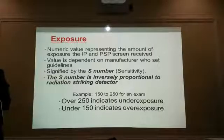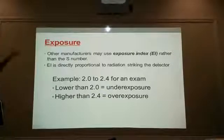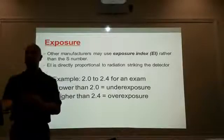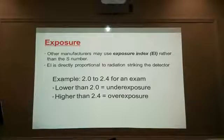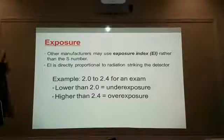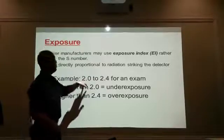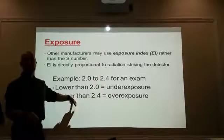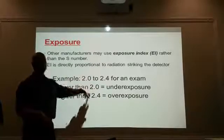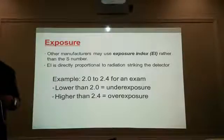The other number we're going to talk about is the EI, or the Exposure Index. It's also a number you'll find at the very top or bottom of your screen when the picture pops up. If the number goes over your range — let's say for a chest X-ray the range is between 2.0 and 2.4 — if my number is over 2.4, that means I overexposed my patient. Under 2.0 is underexposed. Between 2.0 and 2.4, you're safe and the patient's safe.